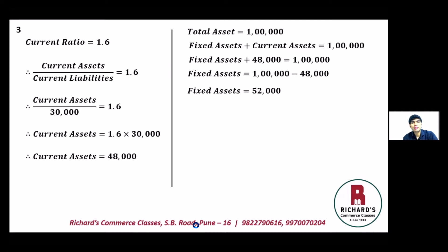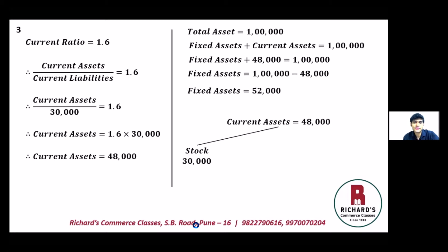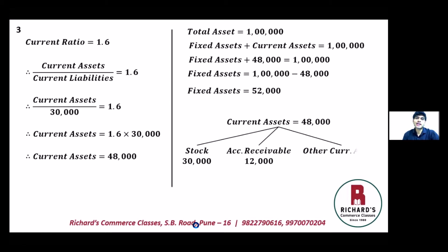We can also find the breakup of current assets. Total current assets are 48,000. Stock is 30,000 and accounts receivable is 12,000. So other current assets equal 48,000 minus 30,000 minus 12,000, which gives six thousand rupees. We now have all the detailed information to prepare the balance sheet.